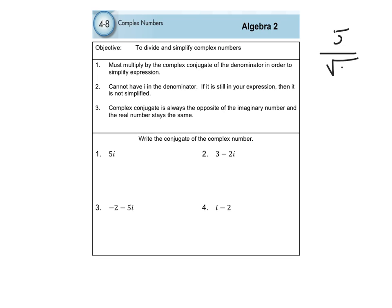For example, you could not have 5 over the square root of 3. We can't do that. Because we can't have a square root in the denominator, that means we can't leave the letter i in the denominator either, because i is the square root of negative 1, which would leave a square root in the denominator.